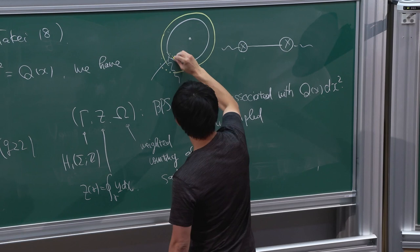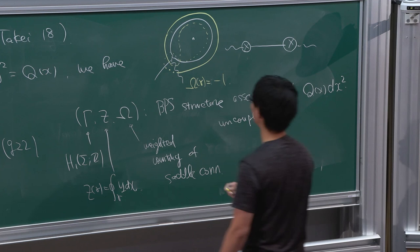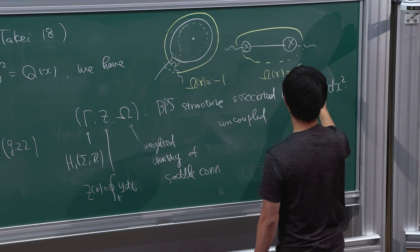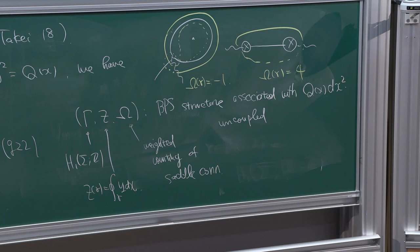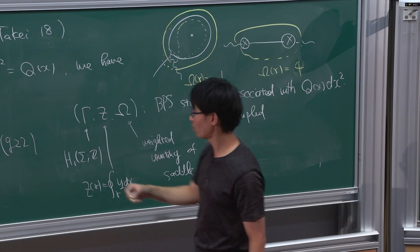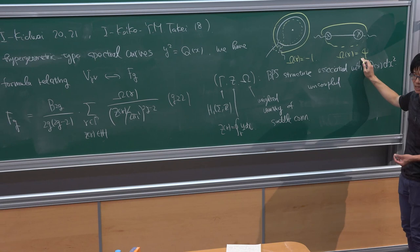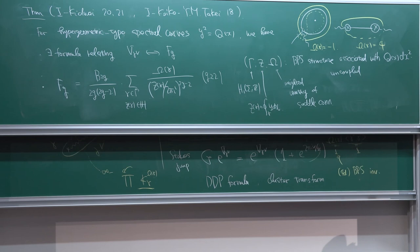For these cases, we have some VPS cycles. For the third class, this is a generalization which encircles around the subtle connection. For this gamma I assign minus 1, and here I assign 4. This BPS number 4 was later interpreted as an actual DT invariant by Fabian Haiden. I have only 20 minutes left, so I want to move on to the second part.